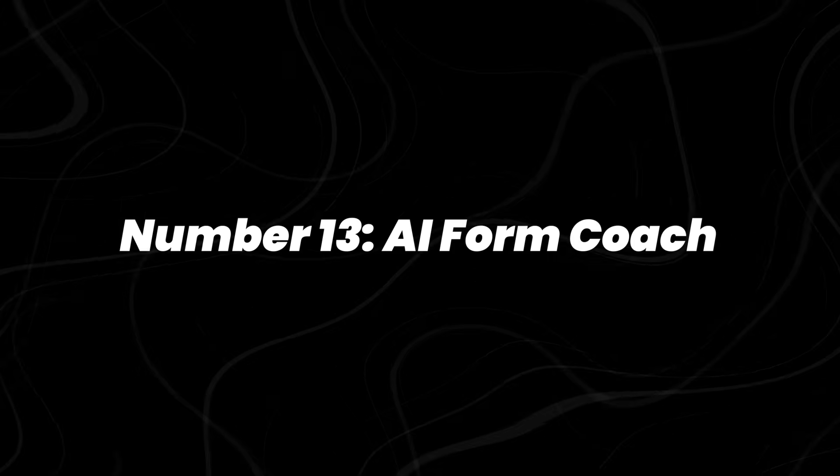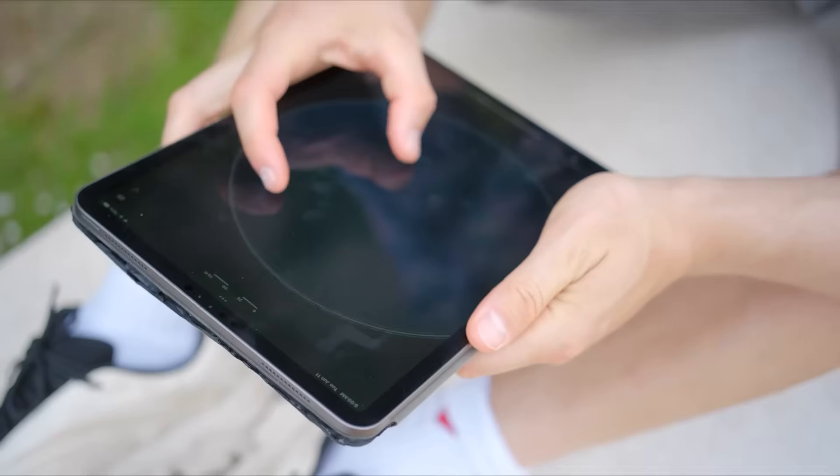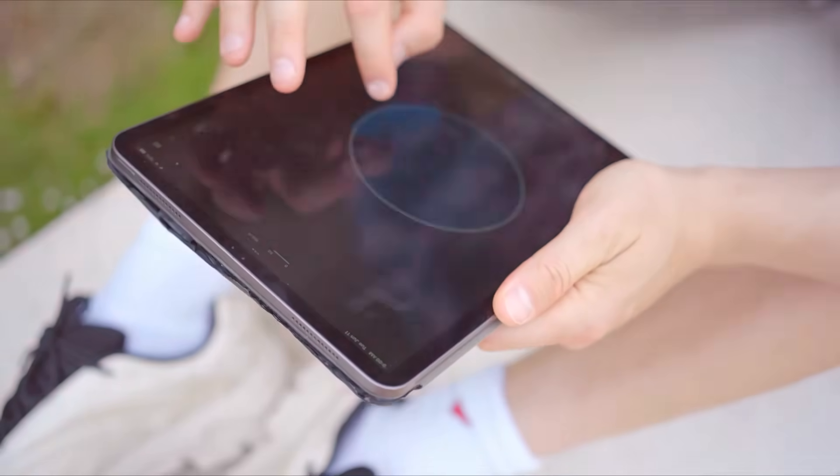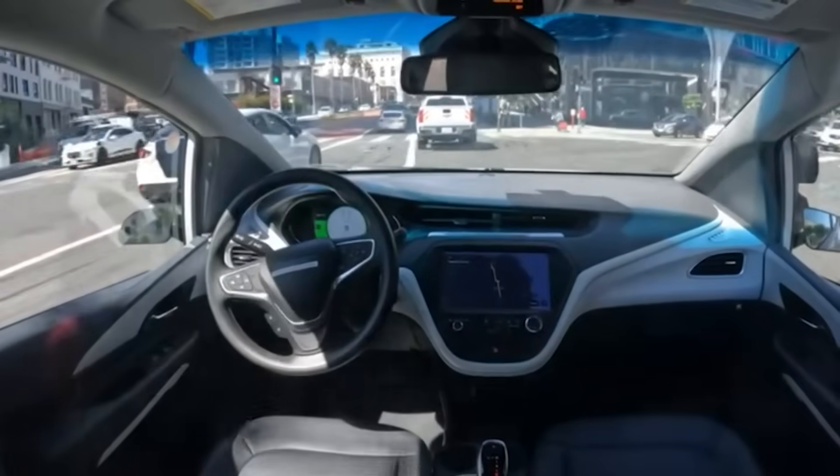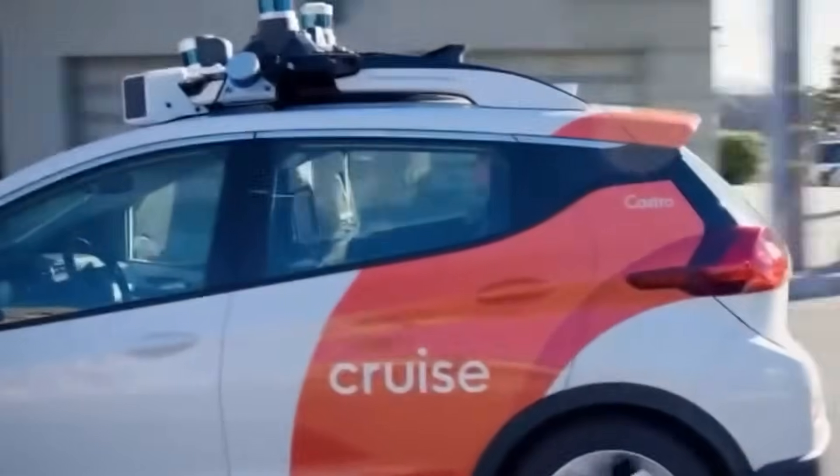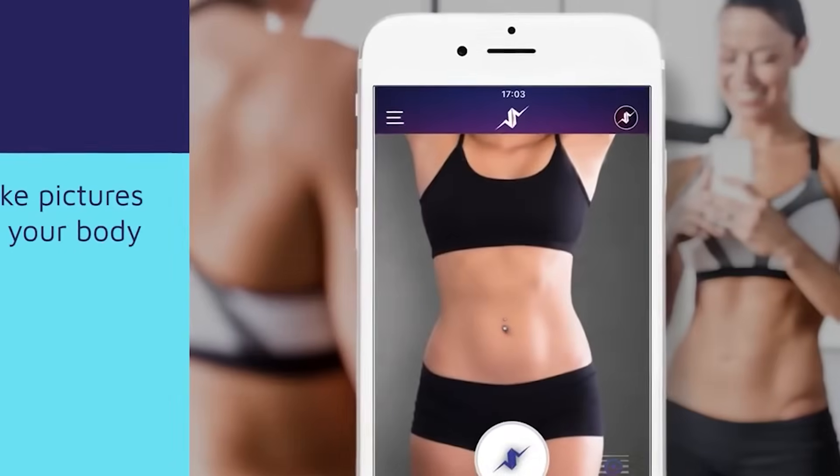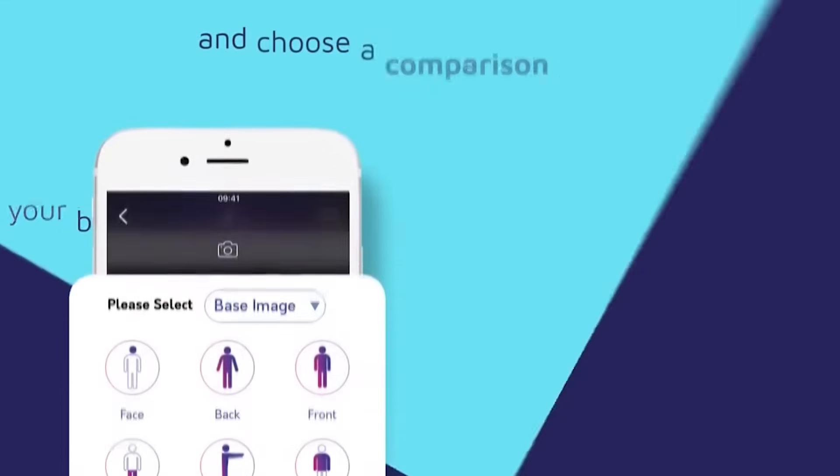Number 13, AI Form Coach. Workout mirrors had their moment, but now your phone's doing the coaching. Using the same pose estimation tech found in self-driving cars, fitness apps like Tempo and Anytime Gym can track your body in real time to correct posture and count reps.